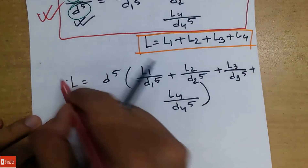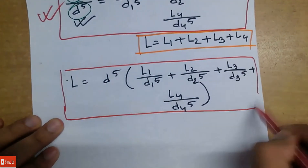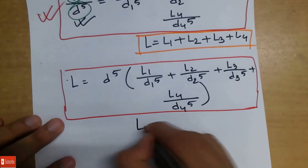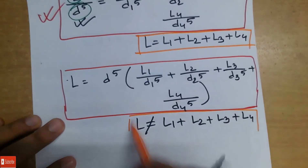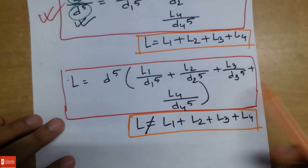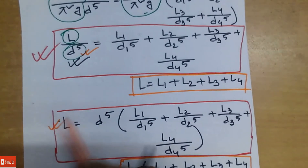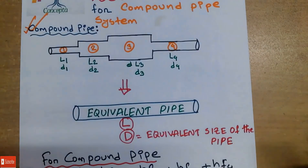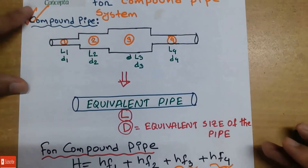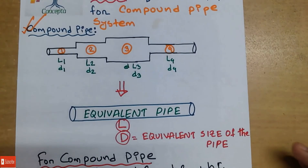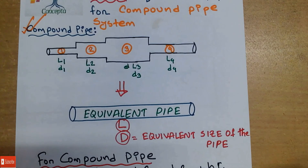So, this is the correct equation. We can use the equivalent length. The equivalent length is L0 equals L1 plus L2 plus L3 plus L4. We use the equivalent size of the pipe and the equivalent length is equal to the pipe system. We use the same formula. Thank you for joining us on our Facebook page and YouTube channel Concept 71. Like, Subscribe, Comment and Share.